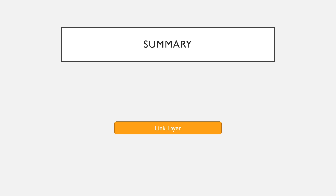Another simple example is a washing machine — you simply press a button and the washing machine starts washing the clothes. The circuitry takes care of washing the clothes and you simply inform it by pressing a button. It cannot get simpler than this. So to conclude, the link layer provides the GAP layer an abstraction and a way to interact with the radio.